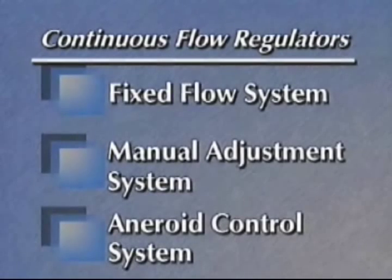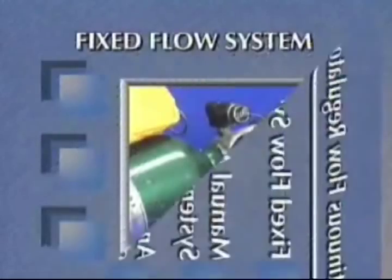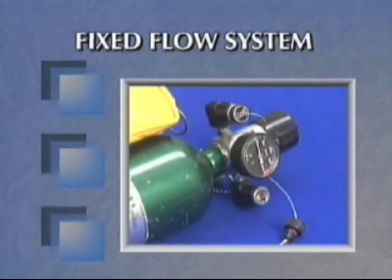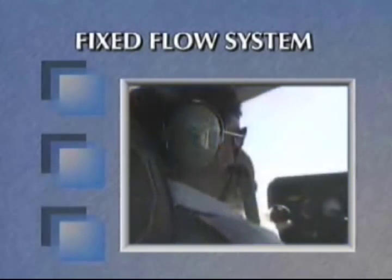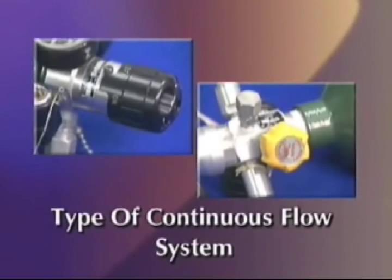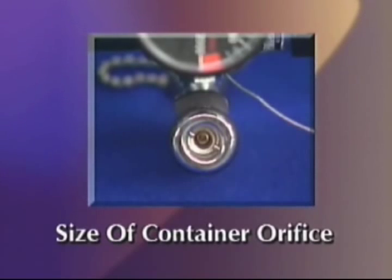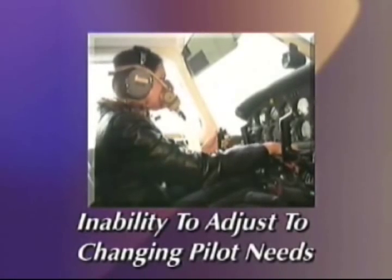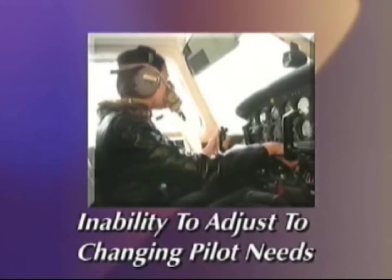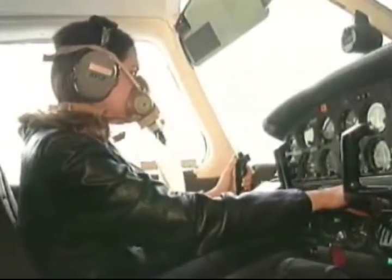There are three types of continuous flow regulators. The fixed flow system delivers oxygen continuously once the system is activated. The amount of oxygen flow is determined by three factors: the type of continuous flow system in use, the orifice size coming out of the container, and the orifice size on the plug-in adapter at the end of the mask hose. The primary disadvantage of a continuous flow system is its inability to adjust automatically to the changing needs of the pilot's level of physical exertion or altitude changes during flight.